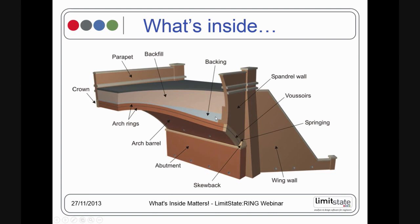We may also have backing material around the haunches of the arch barrel. Alternatively, particularly common in railway bridges, we may have internal spandrel walls and voided construction with voids between longitudinal walls. However, here we're primarily interested in backfill bridges — bridges with soil backfill used to provide a level road or rail surface.